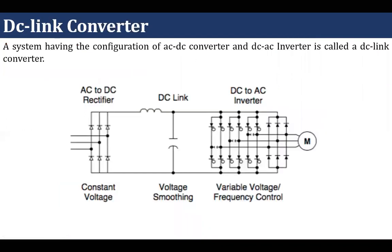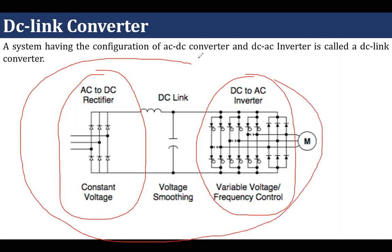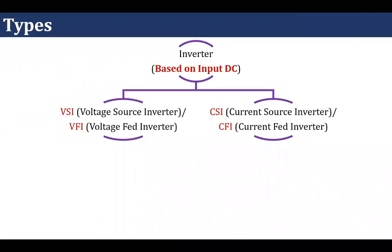Now, this is a very famous terminology: DC link converter. Any circuit which has the combination of an AC to DC converter plus a DC to AC converter — the whole combination will be known as a DC link converter. So a DC link converter converts AC power into DC power and then converts that DC power into a desired level of AC power.